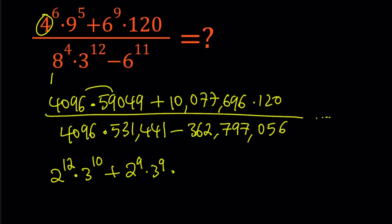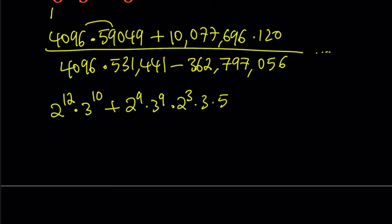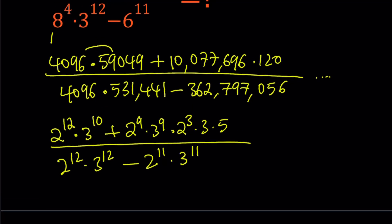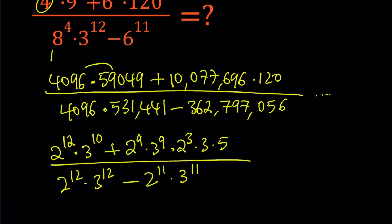And 120, think about its prime factorization. It's 8 times 15, which is 2 to the 3rd power, times 15 is 3 times 5. And all of that is divided by 8 to the 4th, which is 2 to the 12th, times 3 to the 12th, minus 2 to the 11th times 3 to the power of 11th, because 6 can be broken down again into 3 times 2.